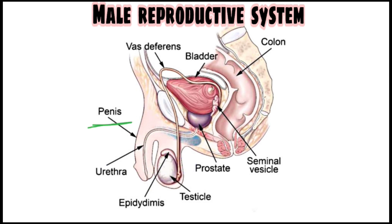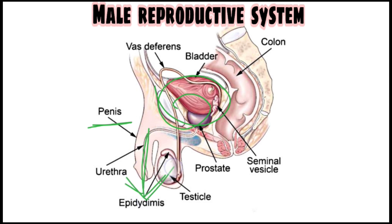The main functions of the penis are: to protect the internal organs from infection, to help in the ejection of sperm, to help in the expulsion of urine, and to help in sexual intercourse.